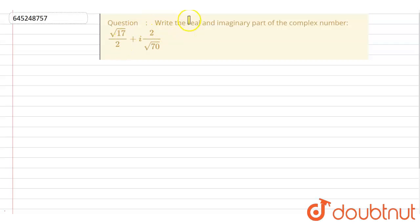Hello everyone, so the question is: write the real and imaginary part of the complex number √17/2 plus iota 2/√17.